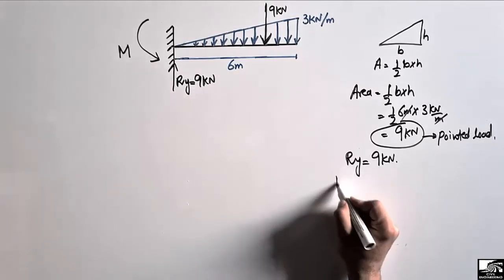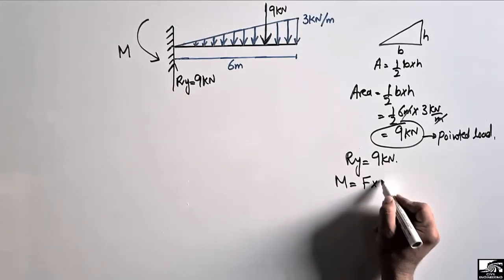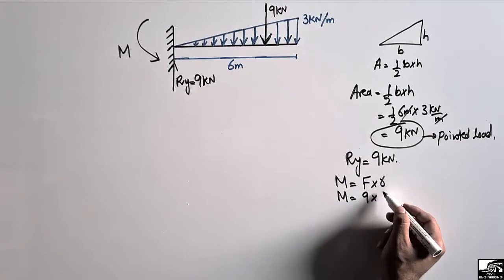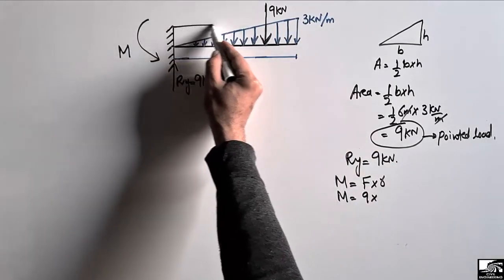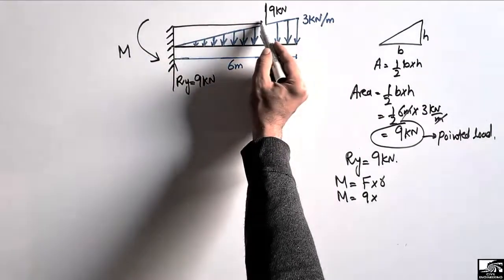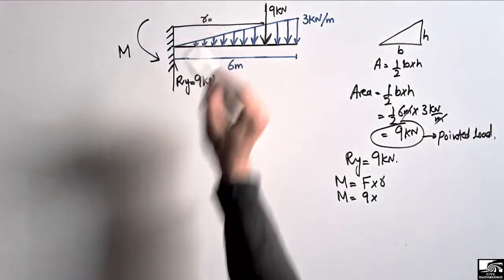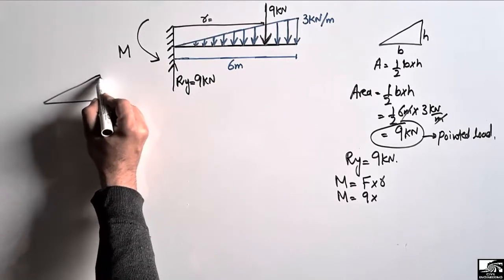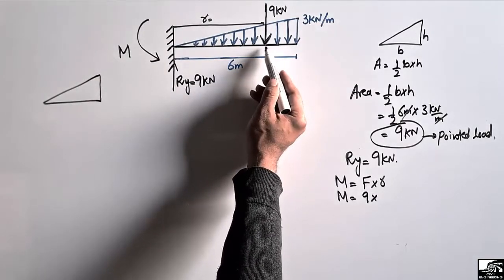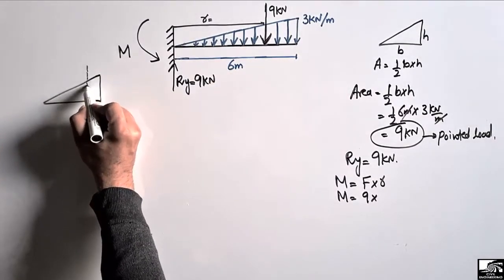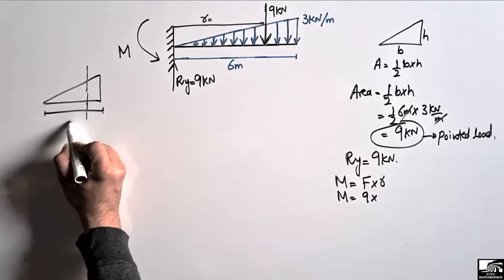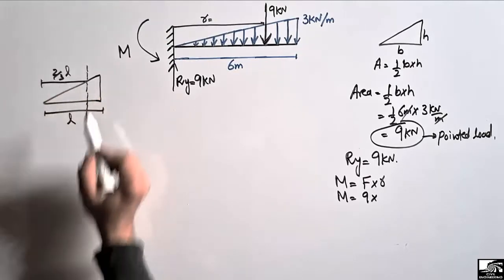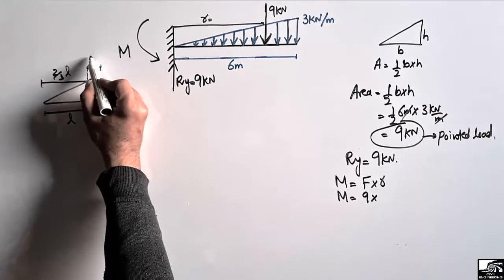To find the moment M, we use: M = Force × moment arm. The force is 9 kN, and the moment arm is the distance from the point load to the fixed support. For a triangular load, the resultant acts at the centroid of the triangle. If the total length is L, the centroid is located at two-thirds of L from the zero-load end and one-third of L from the maximum-load end.